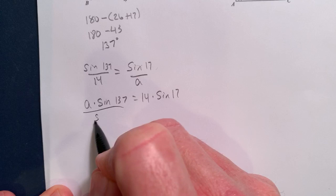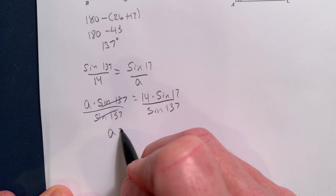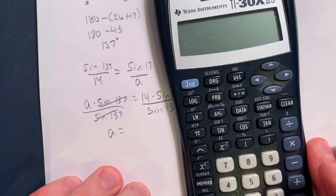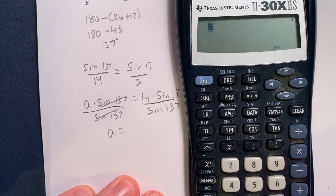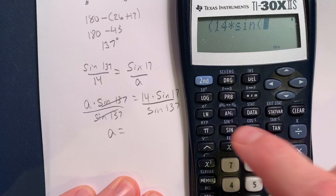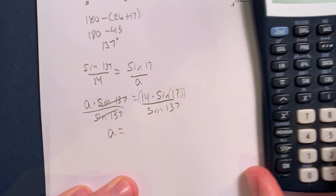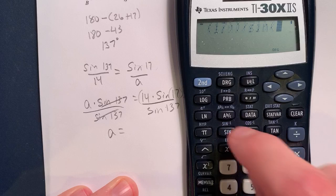So from here, I'm going to divide both sides to get A all by itself. Divide both sides by sine of 137. That eliminates that. I get A equals, and then just as a matter of plugging this into the calculator, and you've got to make sure you do it correctly. A lot of parentheses issues here, so pay attention. So I'm going to go parentheses, 14 times sine of, and then it's going to go 17. I got to end the parentheses there, and then end the parentheses for the top. So what we're looking at is basically I've typed in this.